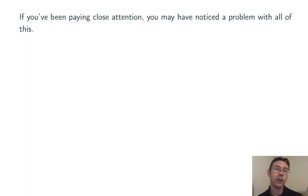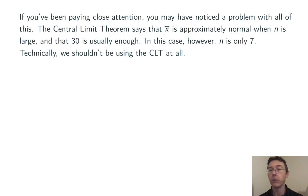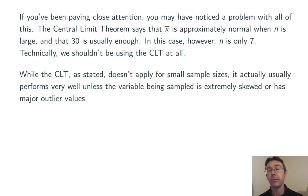If you've been watching and listening carefully, you may have noticed a problem with all of this. The central limit theorem says specifically that x-bar is approximately normal when n is large, and that 30 is usually enough. But in this case the sample size n was only 7, so technically it seems like we shouldn't be using the central limit theorem at all. However, while the CLT as I've written it doesn't apply for small sample sizes, it actually usually performs very well — unless the variable you're sampling from is very skewed or has major outlier values.